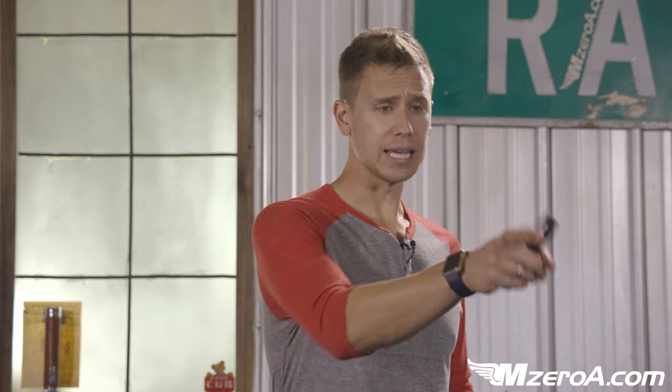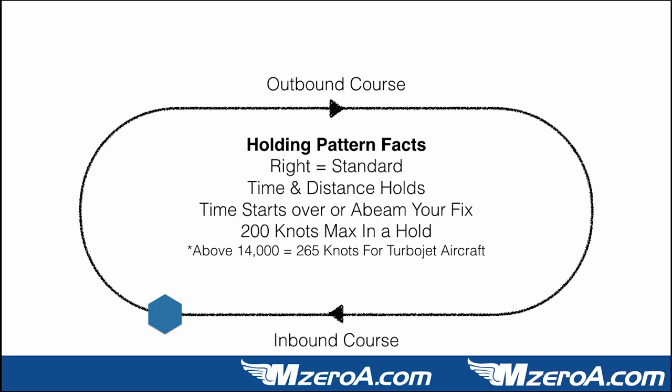It doesn't matter how long outbound is. In fact, outbound may have to be 30 seconds to make inbound 60 seconds. So it doesn't matter what outbound is — it matters what inbound is. On a distance hold, however, each leg is going to match. The goal is to make the inbound that distance, but to make it that distance the outbound has to be the same. Time starts over abeam the fix. 200 knots maximum in a hold, and above 14,000 it's 265 for turbojet aircraft.